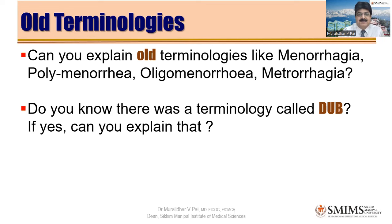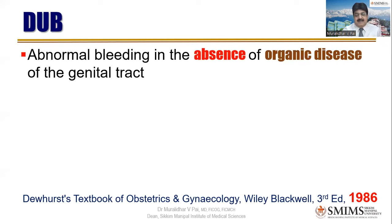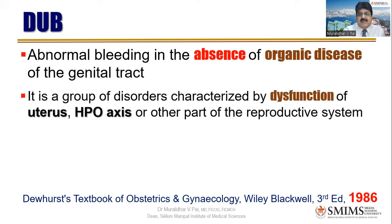In the current system, DUB is categorized under ovulatory-type problems. There is no organic disease — no fibroid, no cancer, nothing in the uterus, ovaries, or anywhere in the genital tract — yet there is abnormal bleeding. That was called dysfunctional uterine bleeding: the pituitary-ovarian axis or the local hormonal milieu was at fault. The classification in Dewhurst's third edition of 1986 categorized it as primary ovulatory or anovulatory, and secondary due to pathology outside the genital tract, such as hyperthyroidism or other endocrine problems.